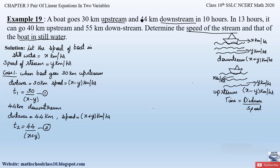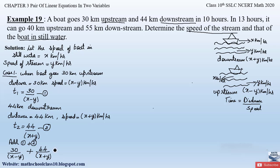In the first case the total time taken is 10 hours. So we add equations 1 and 2: 30 divided by x minus y plus 44 divided by x plus y equals 10. Let this be equation number 3.